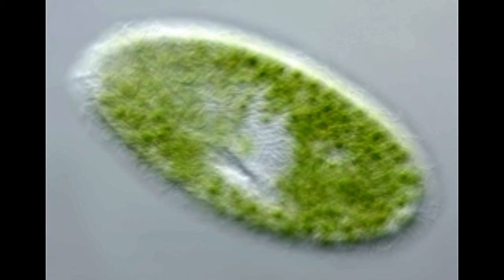This stiff outer covering imparts the particular slipper shape to the microorganism. The pellicle is covered by tiny and thin hair-like structures called cilia. These structures are the characteristic features of all members belonging to the class Ciliata.